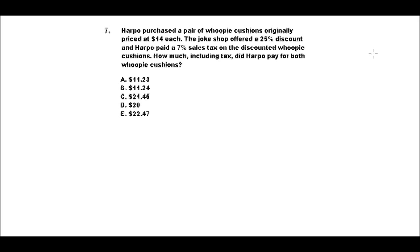Alright, so the first thing that you might notice is that there are two whoopee cushions, there's a pair. So the first step is just to take 14 times 2, which is 28. And then the joke shop offered a 25% discount and Harpo paid 7% sales tax on top of that. Well, let's start with a 25% discount.